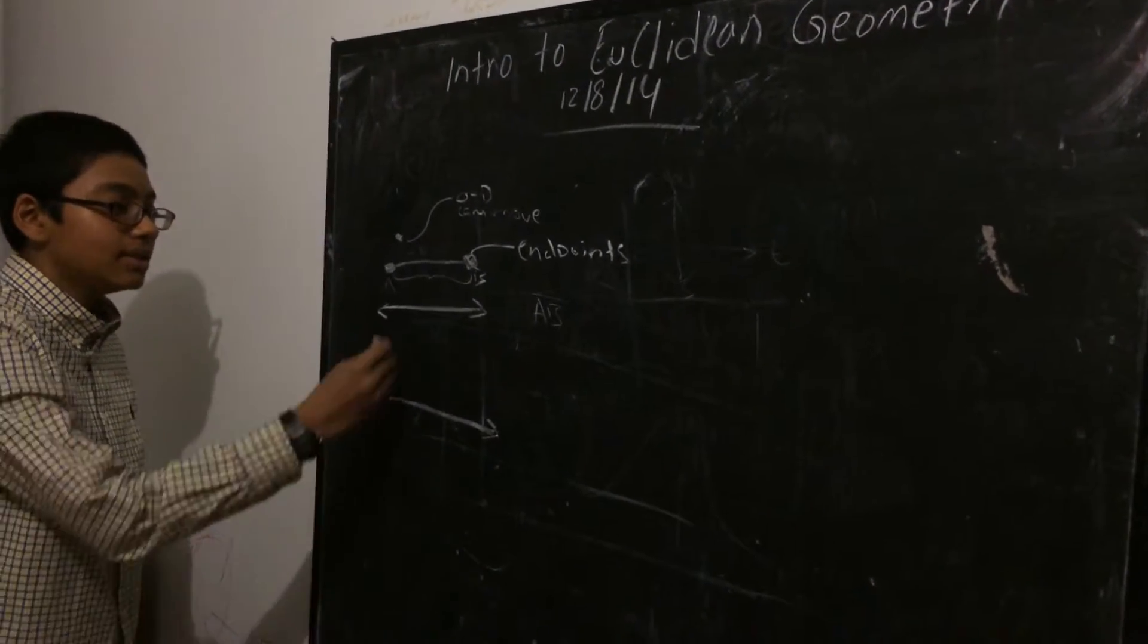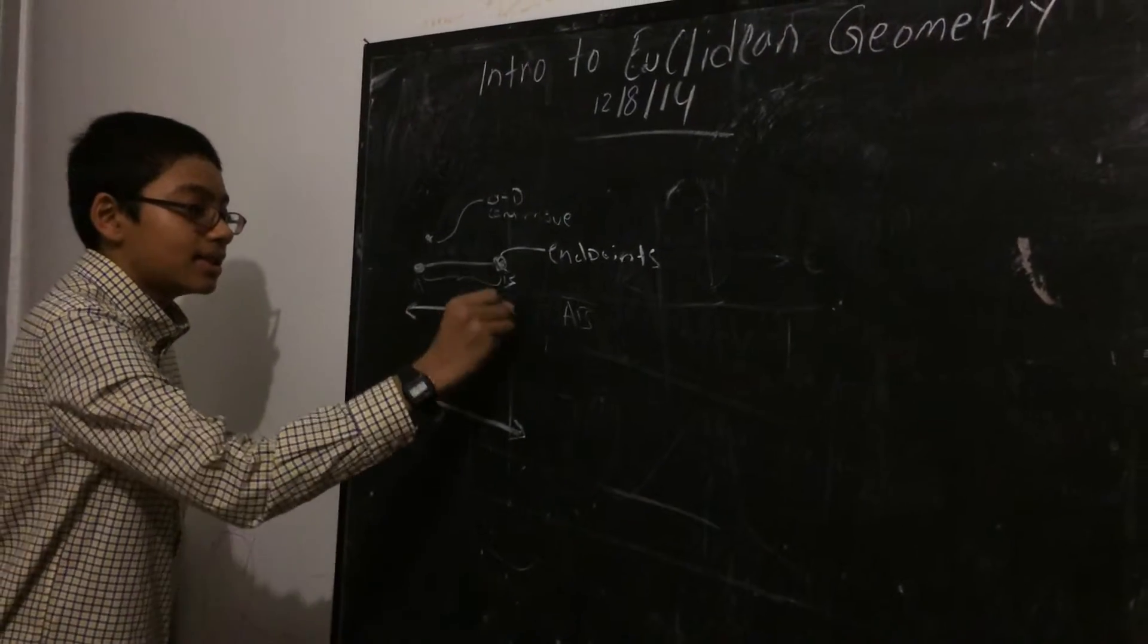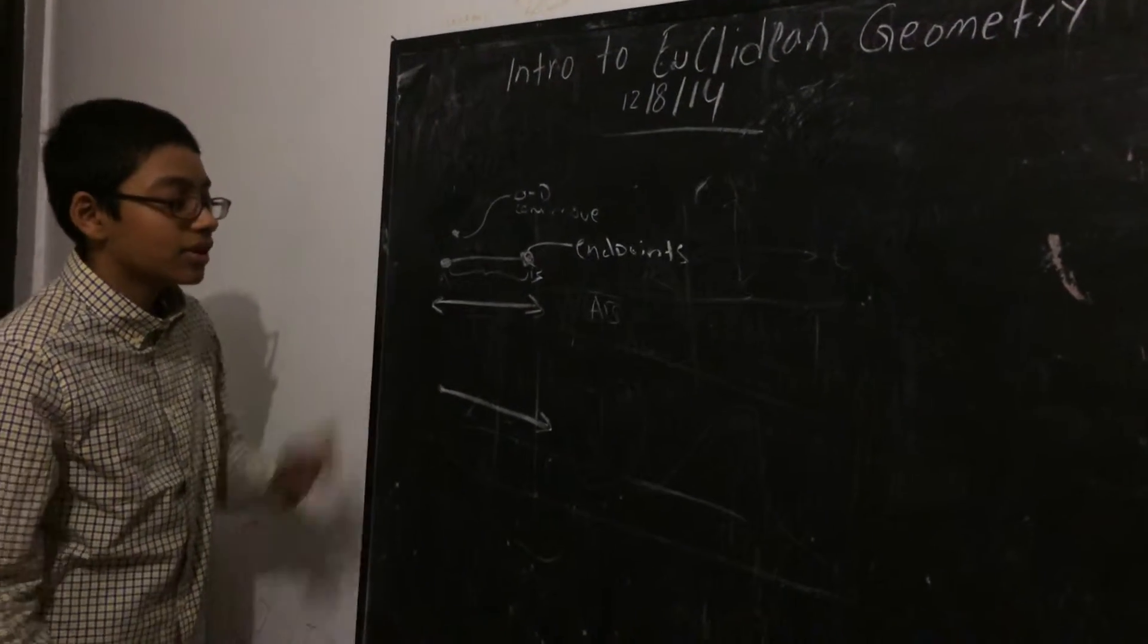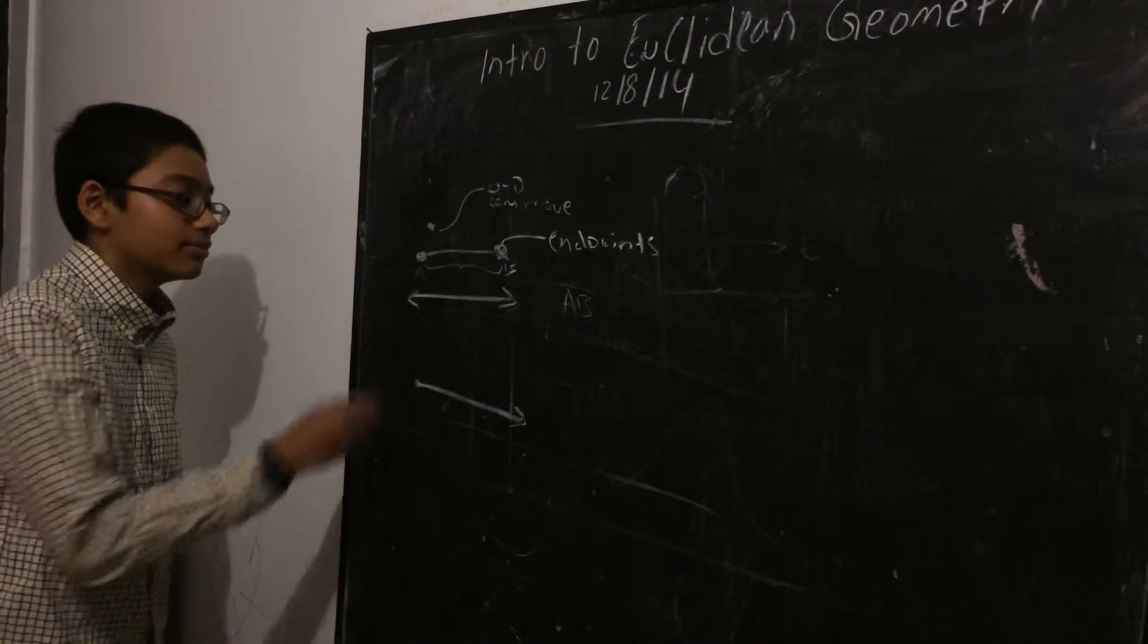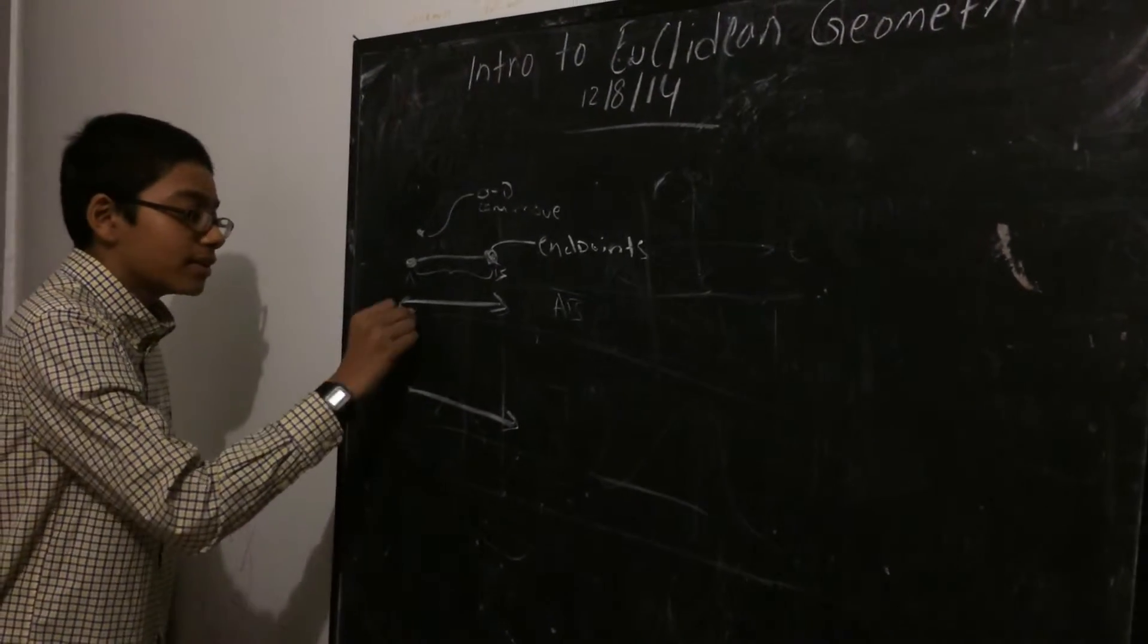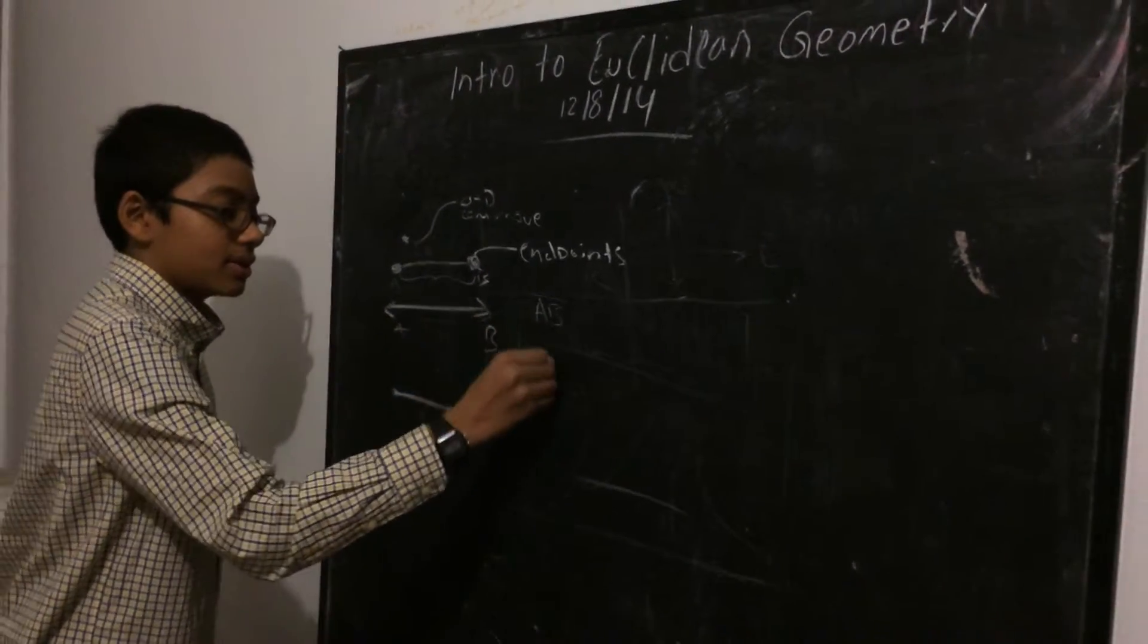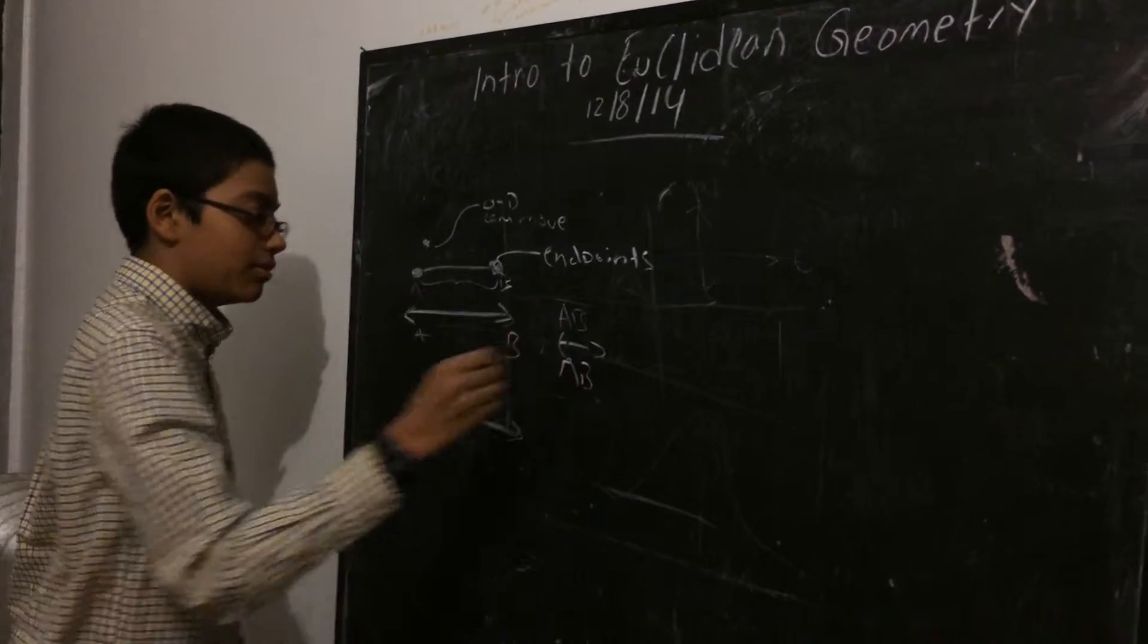This is a line, these arrows indicate that the line goes on forever and you could also write this as line AB.